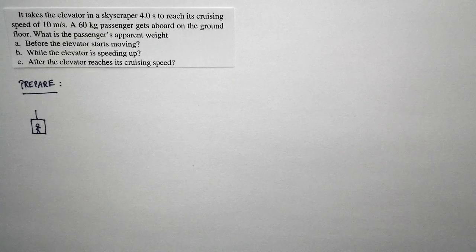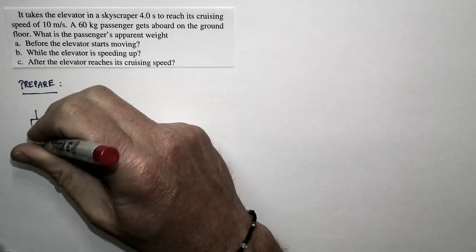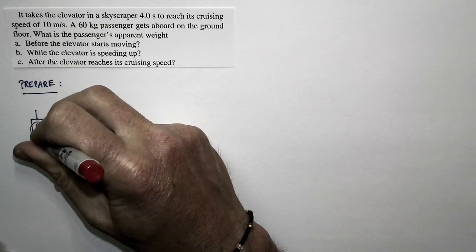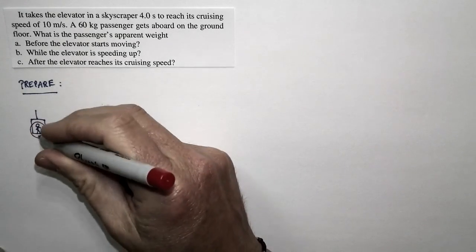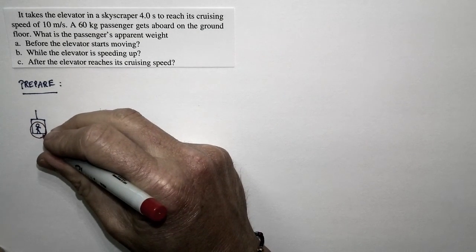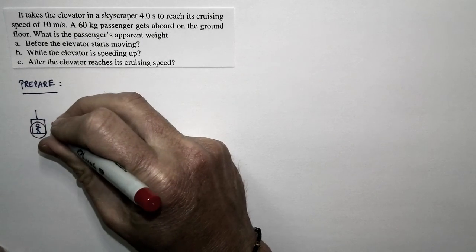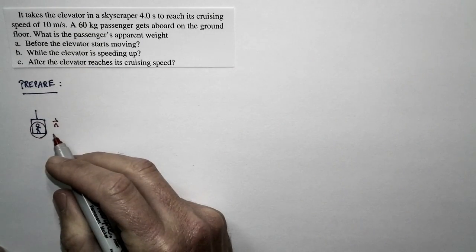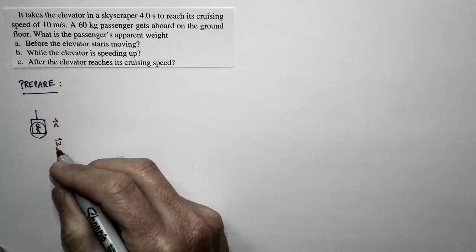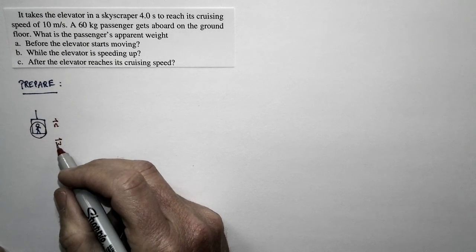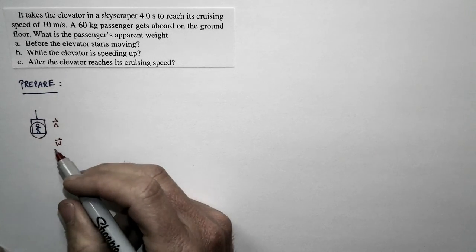Let's look at the forces that act on the passenger using a force identification diagram. Looking at the passenger in isolation, there are two forces. First, the contact force — the normal force of the floor pushing up on the passenger. Then there's the weight force, a long-range force directed downward. The normal force pushes up, the weight force pulls down. That's it.